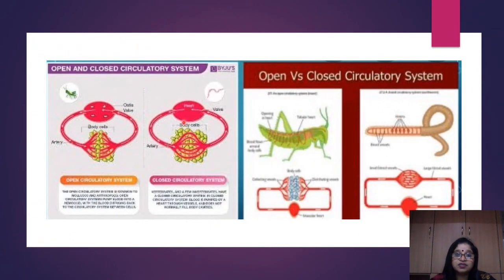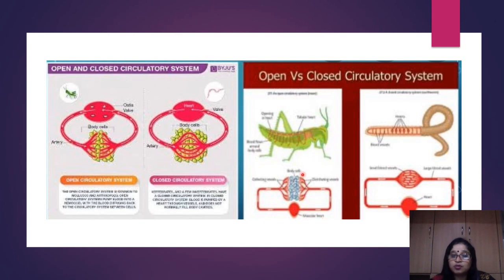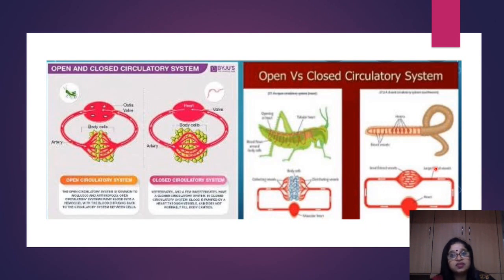In an open circulatory system, cells are in direct contact — they are bathed in the circulating fluid. In a closed circulatory system, a network of vessels forms near tissues and cells, which do not come into direct contact; exchange takes place across the walls of the capillaries. The grasshopper is an example with an open circulatory system, while the earthworm is an annelid with a closed system where blood flows through vessels forming a network.